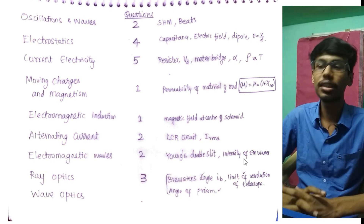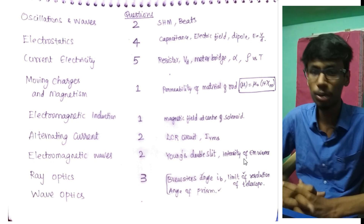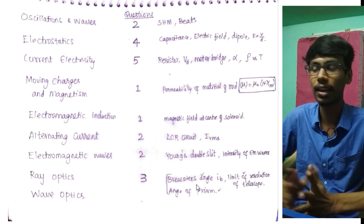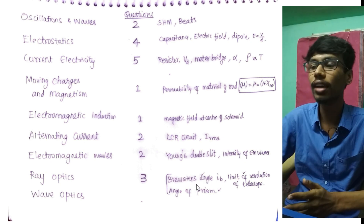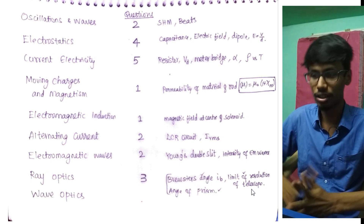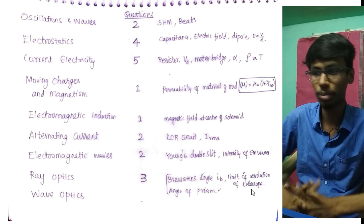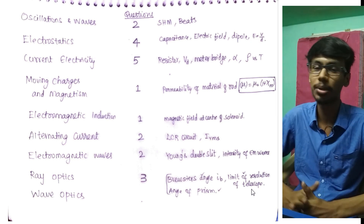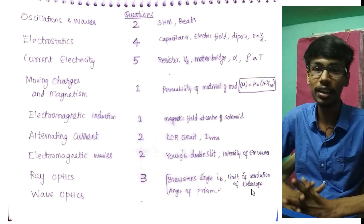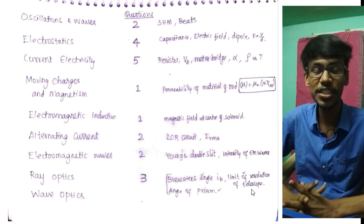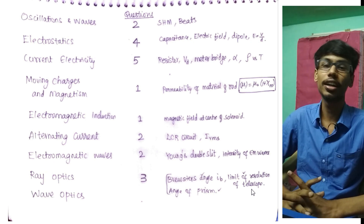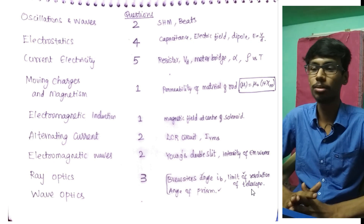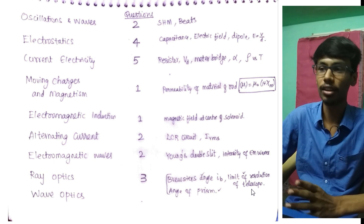Ray Optics: three questions. One is Brewster angle. There is a limit of resolution of telescope. Then angle of prism — directly taken from MTG NCERT Fingertips. There is a question in Ray Optics.